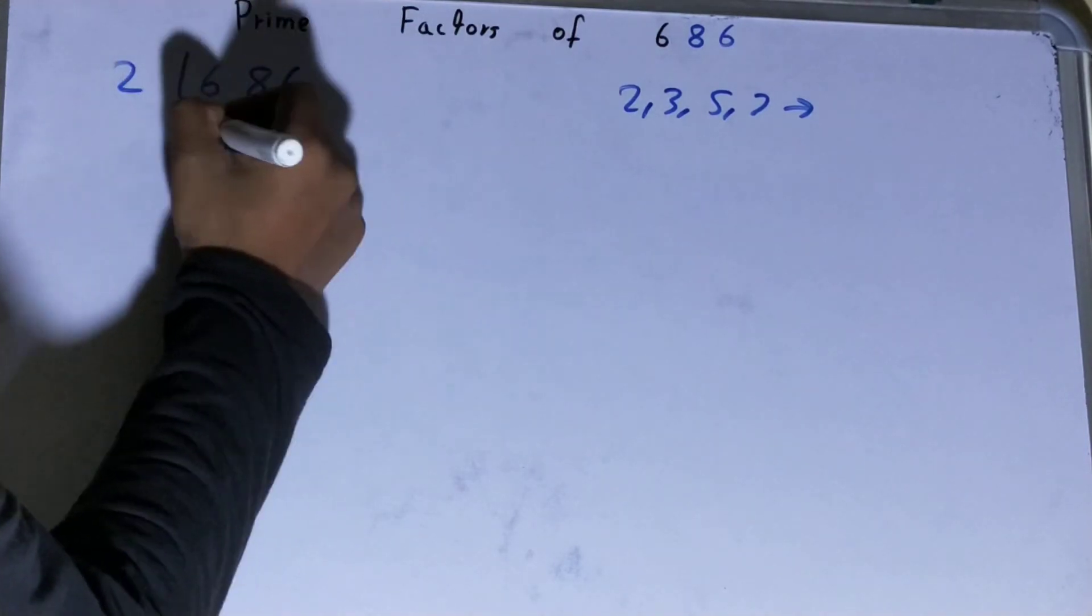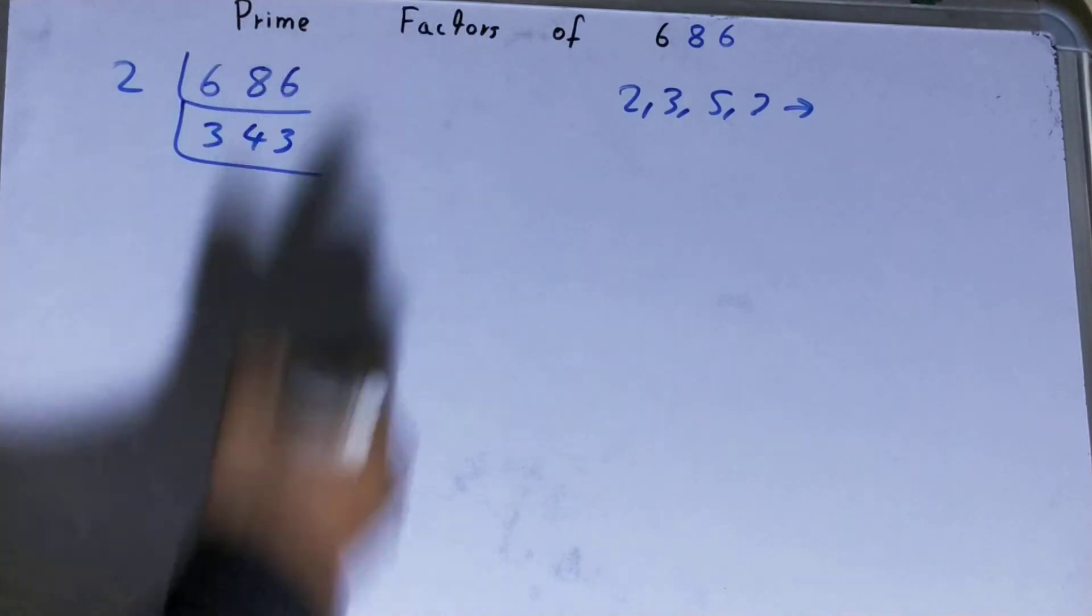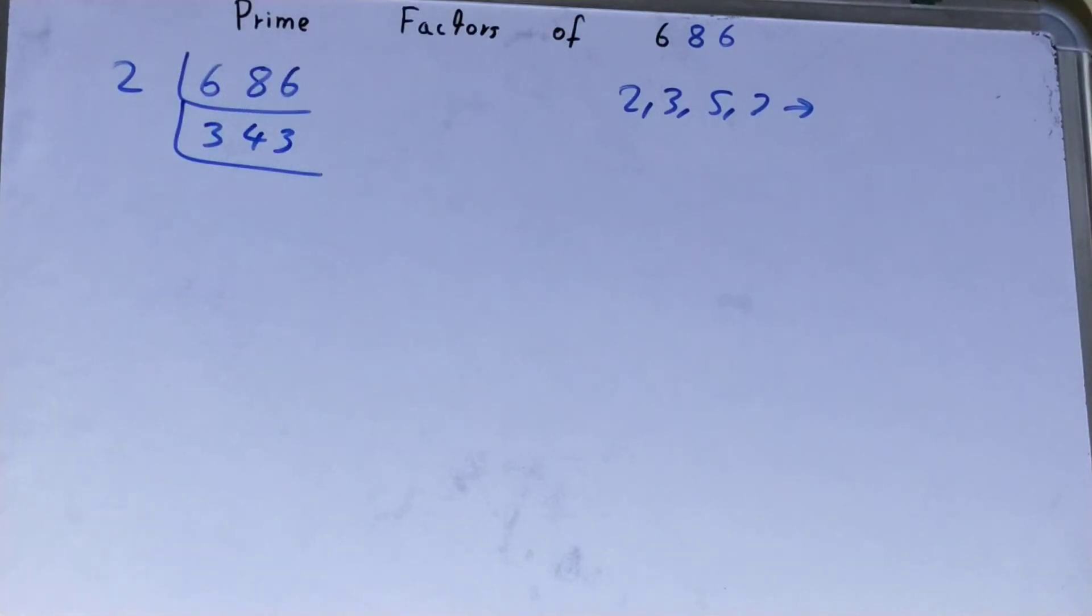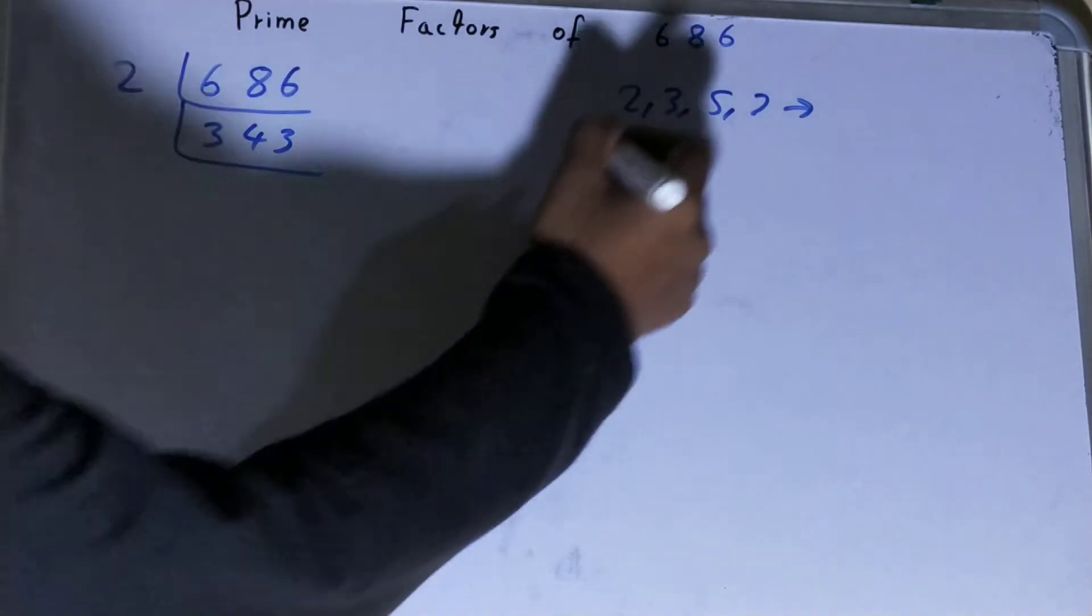Now is this 343 further divisible by 2? The answer is no, it is an odd number. So we'll go to the next lowest prime number we have, that is 3.